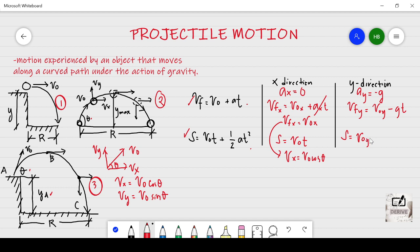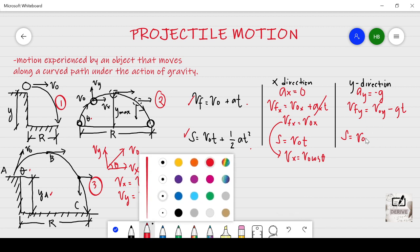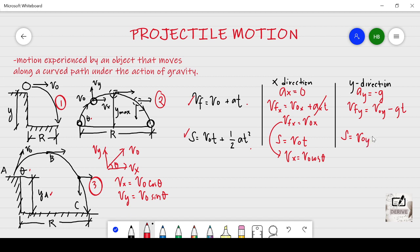V_0Y times T minus 1 half G T squared. There you have it. We are going to use these equations into our projectile motion derivation of formulas. Let us proceed with the first scenario which is here. I will change to black ink and draw it again.